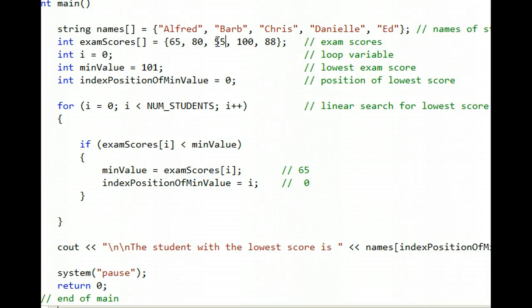So now i is 2. Is 55 less than minValue? Yes, it is. So this 65 now changes to 55. And then the variable indexPositionOfMinValue changes to what i is currently, and i is currently 2. So that 0 changes to a 2.